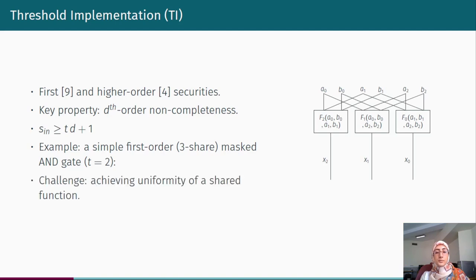The main challenge of threshold implementation is achieving uniformity of a shared function. A simple example would be the direct sharing of dimension AND gate, which successfully attains non-completeness property but fails to achieve uniform output bits.